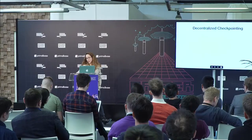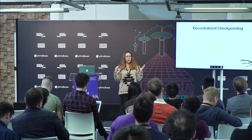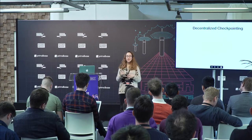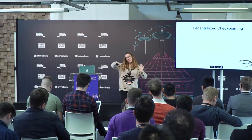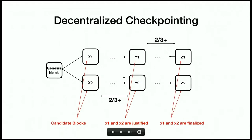To address long-range attacks, where an adversary could almost for free rewrite the entire blockchain history, we add decentralized checkpointing. We use a similar idea to traditional Byzantine consensus protocol — prepare and commit — but incorporated within the DAG structure, and that's how we thwart long-range attacks.